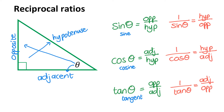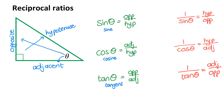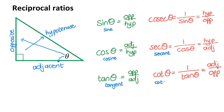Now let me rearrange things a bit so that I can give you the names of these ratios. The names are as follows: cosec of theta, sec of theta, and cot of theta. Let me give you the full names: sec stands for secant, cot stands for cotangent, and cosec stands for cosecant. Note that all the abbreviations are the first three letters of the name.